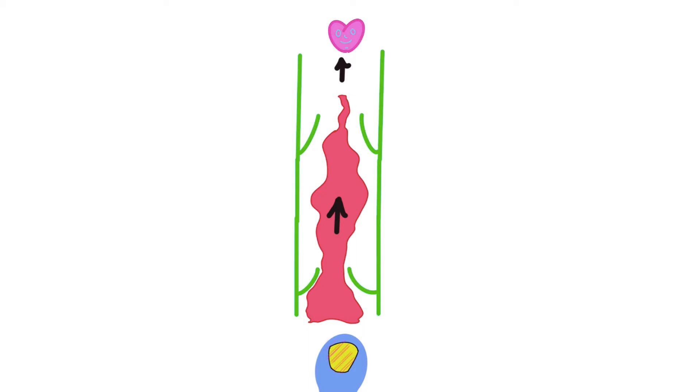As we move along the cardiovascular system through arteries, arterioles, capillaries, venules, and veins, the system progressively loses pressure.